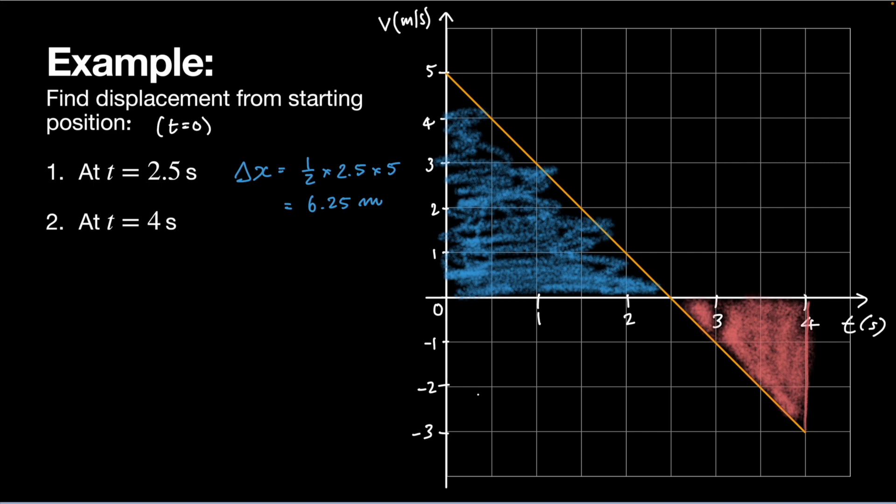To work it out at time equals four seconds, we're going to use the concept of signed area. My displacement will be the sum of those two areas, the blue one and the red one, but the red one is going to have a negative sign. It's going to equal plus 6.25 minus the other piece. It's a triangle, so one half times 1.5, height is three, which is 2.25. That equals 6.25 minus 2.25, which equals four meters.